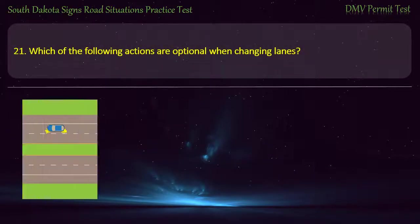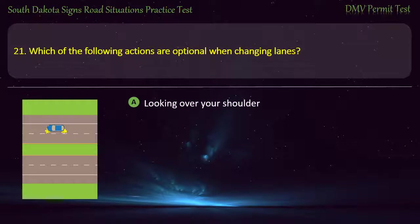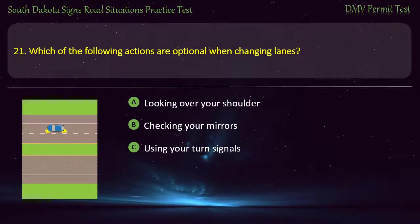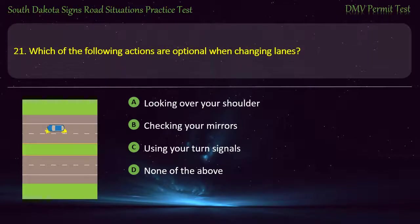Question 21: Which of the following actions are optional when changing lanes? Options: Looking over your shoulder; Checking your mirrors; Using your turn signals; None of the above. Answer: None of the above.